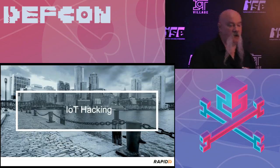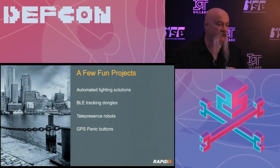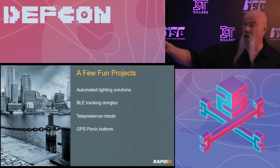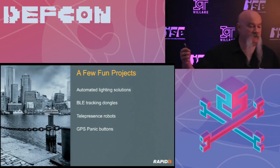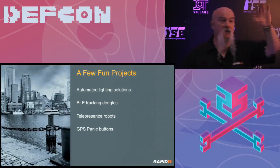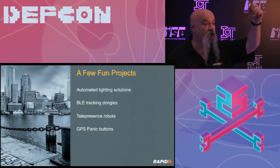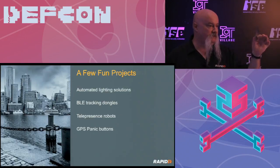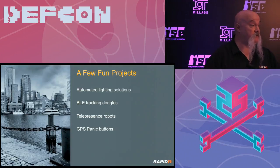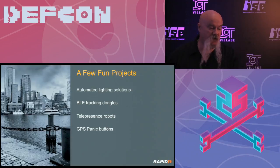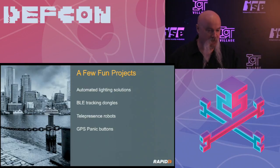Today we're going to talk about vulnerability issues found around automated lighting solutions, BLE tracking dongles — and I believe they're actually using one back here as part of the contest, specifically a Tracker R Bravo which had some serious cloud API problems — telepresence robots, which are like an iPad on a Segway, and a GPS panic button that has a really interesting story.